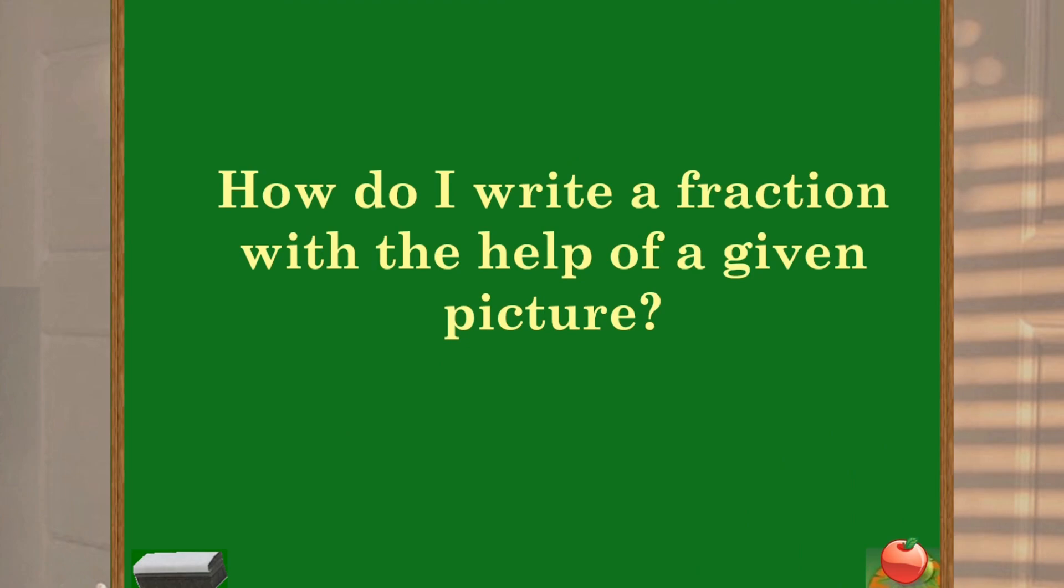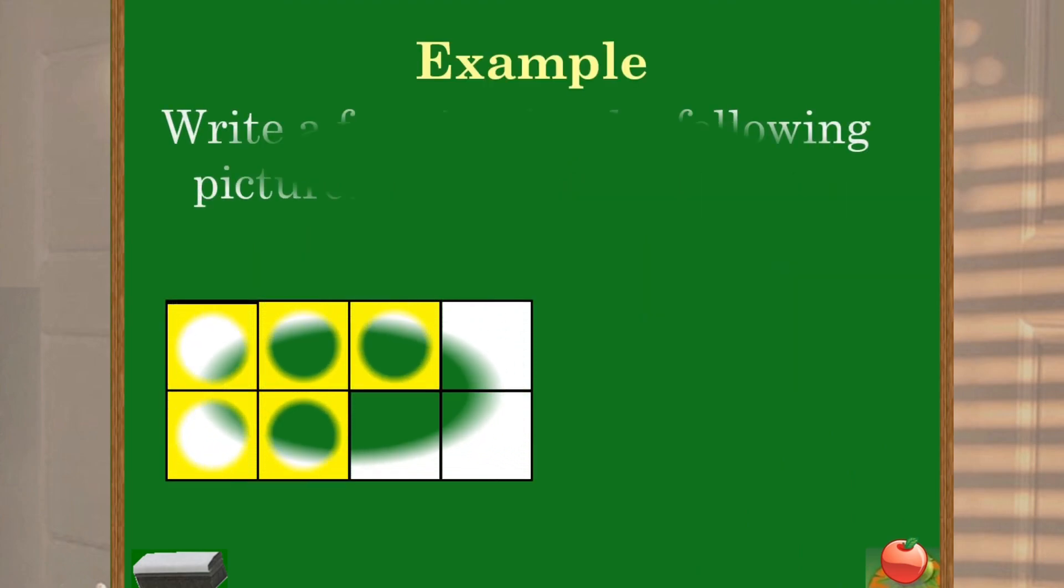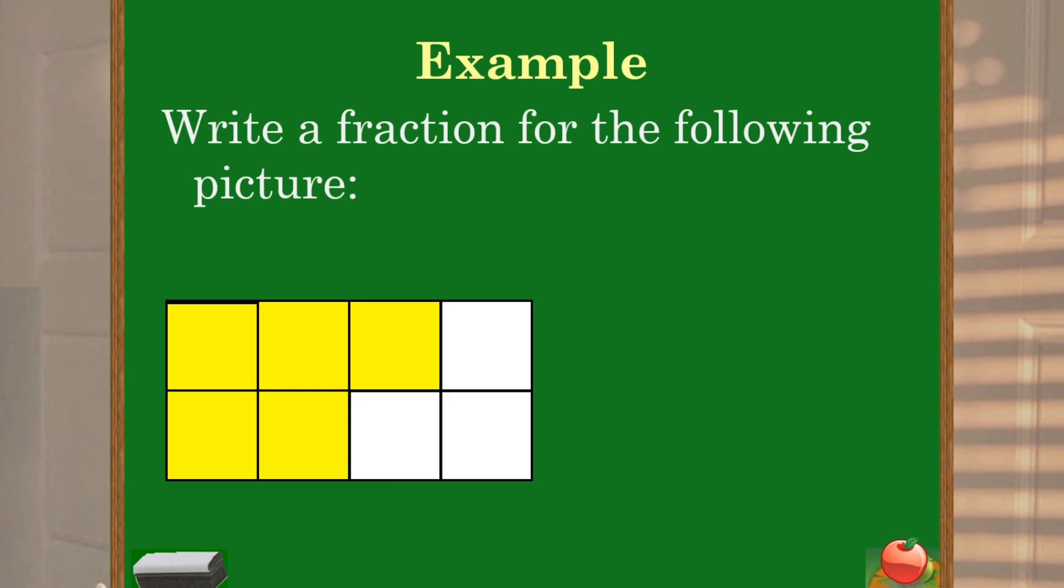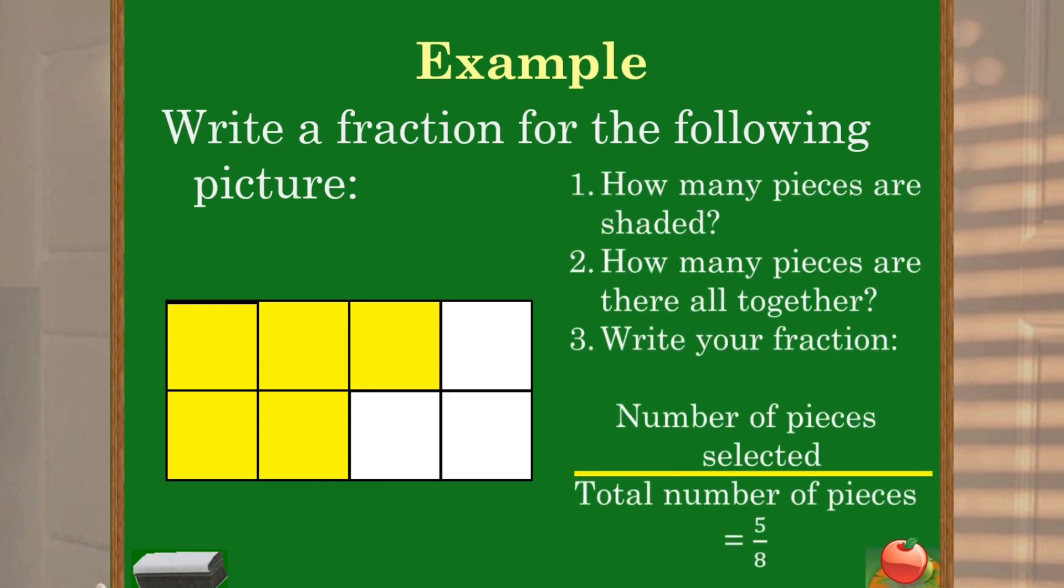Alright, let's write a fraction with the help of a given picture. So now we have a picture here. The first step is we count the number of shaded pieces. That means how many are in yellow. 1, 2, 3, 4 and 5. So our numerator is 5.